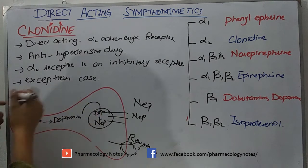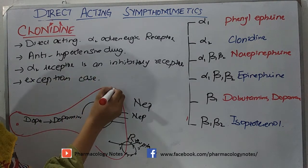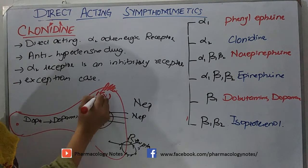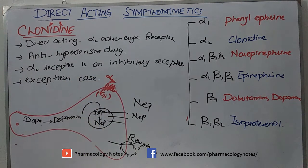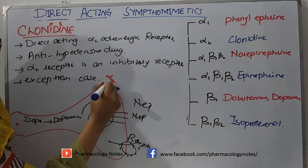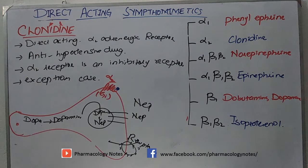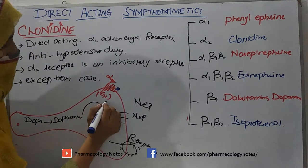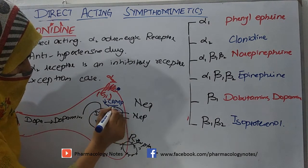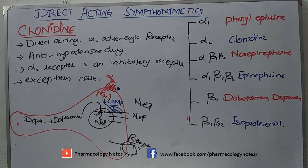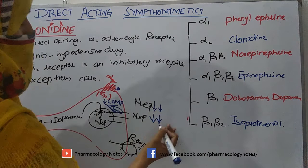There is another receptor present which is inhibitory in nature — this is the alpha-2 receptor. When clonidine binds to this receptor, it causes conformational changes and stimulates the inhibitory receptor. This inhibitory Gi-coupled protein causes decreased cyclic AMP concentration, which inhibits the release of norepinephrine. So norepinephrine in the synaptic cleft will be decreased.